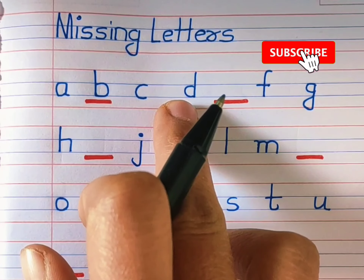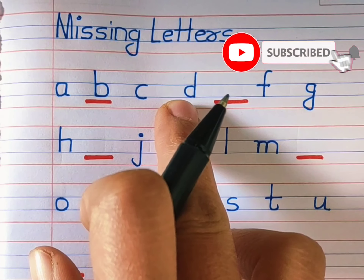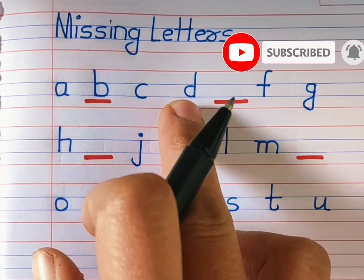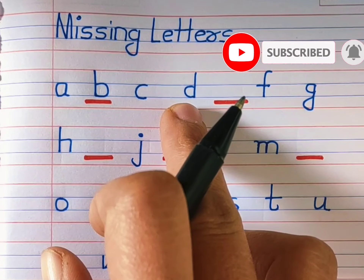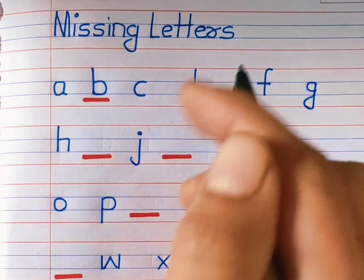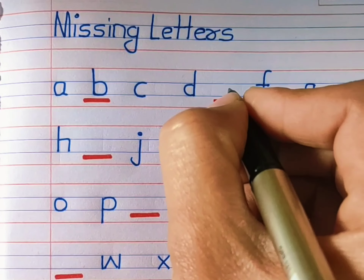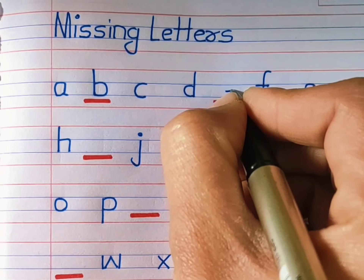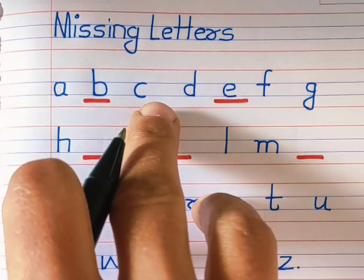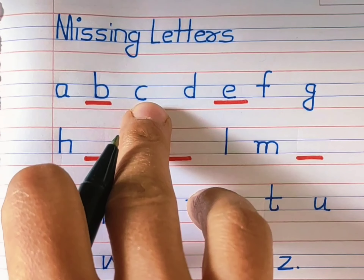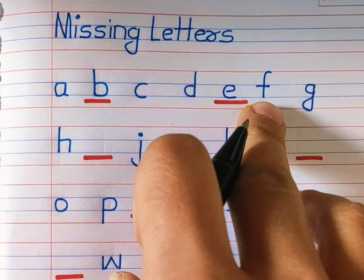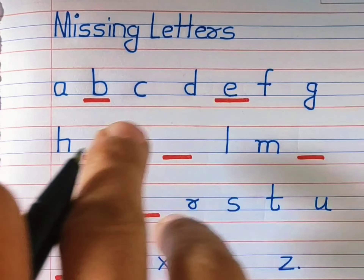Which alphabet is this? D. What comes after D and before F? Yes, E. C, D, E, F, G.